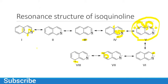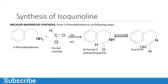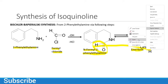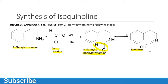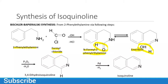Now, the synthesis of isoquinoline: it is synthesized from 2-phenylethylamine reacting with formyl chloride to give N-formyl-2-phenylethylamine. This intermediate exists in resonance form — specifically in the enol form — so we have the keto form and the enol form. You need to keep in mind the difference between keto and enol forms.